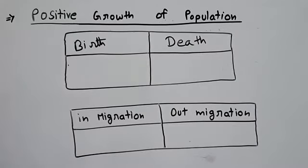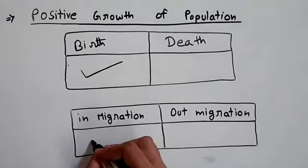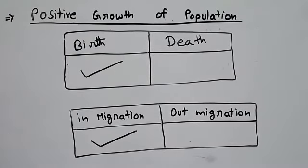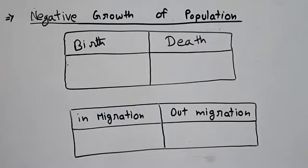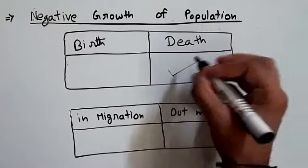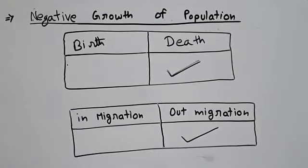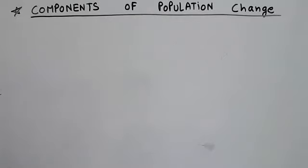Positive growth of population occurs when population increases — either birth rate is much higher than death rate, or in-migration exceeds out-migration. Negative growth of population occurs when population decreases — either death rate exceeds birth rate, or out-migration exceeds in-migration.